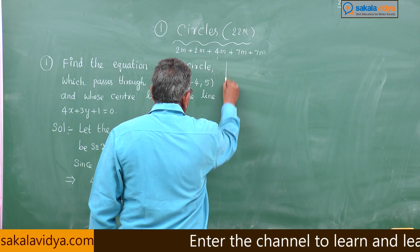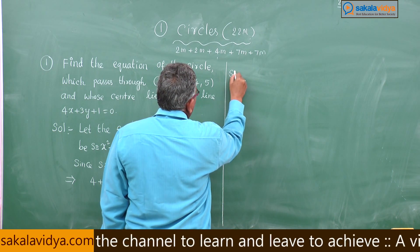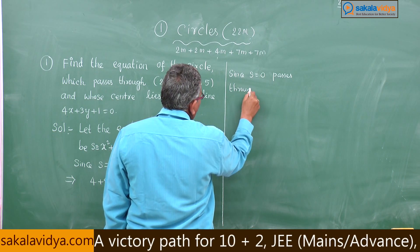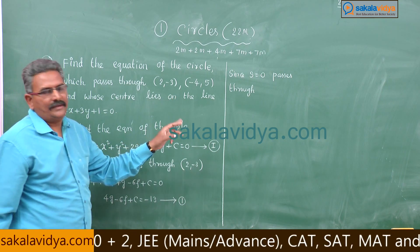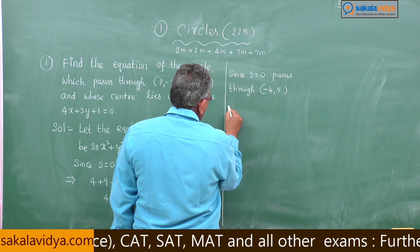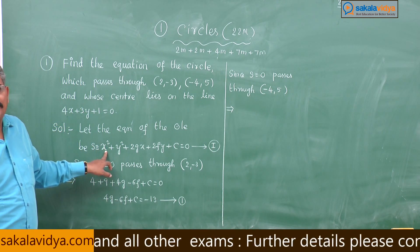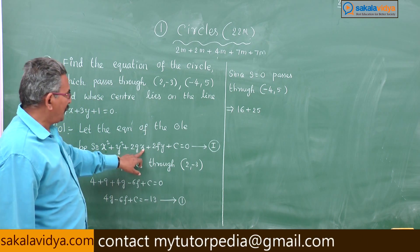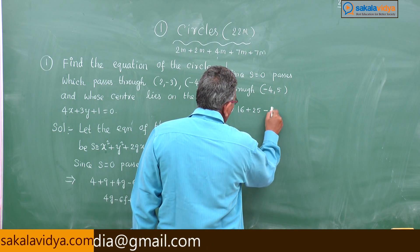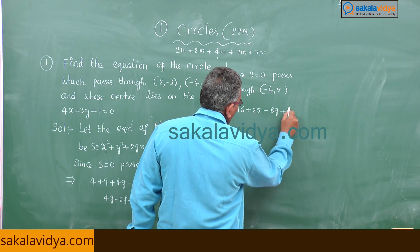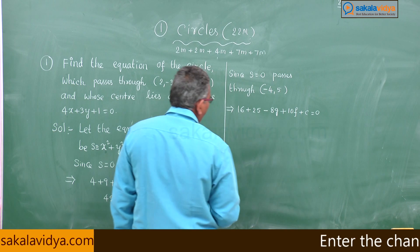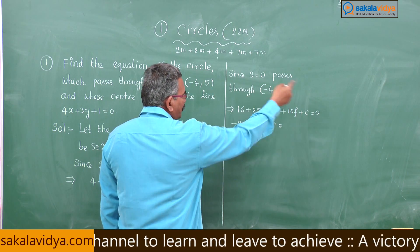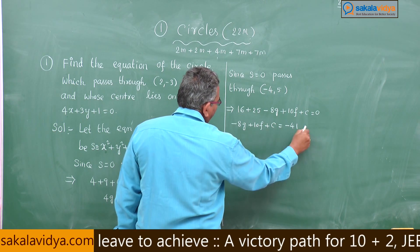Since S = 0 also passes through (-4, 5), substituting gives 16 + 25 - 8g + 10f + c = 0, so -8g + 10f + c = -41. Call this equation 2.